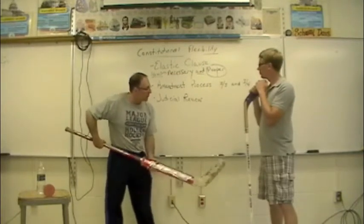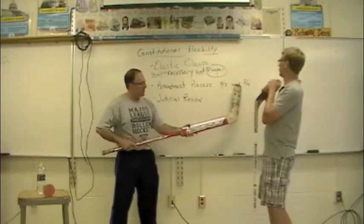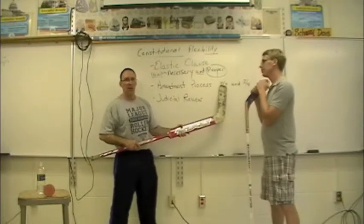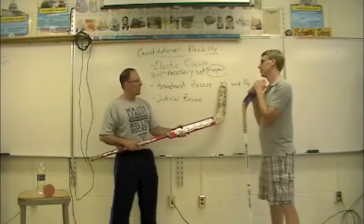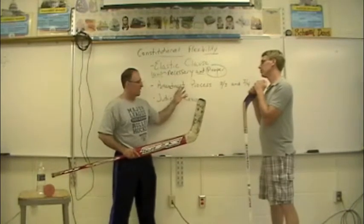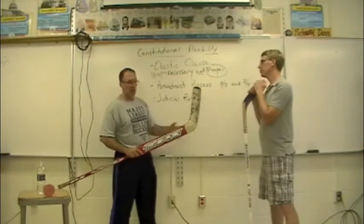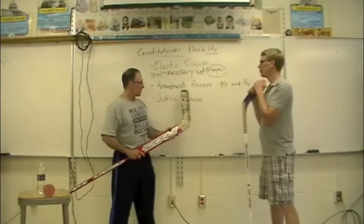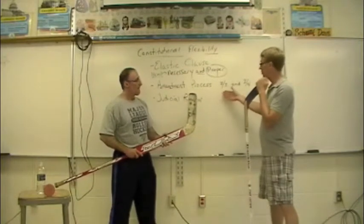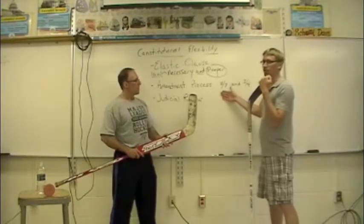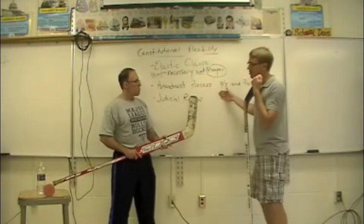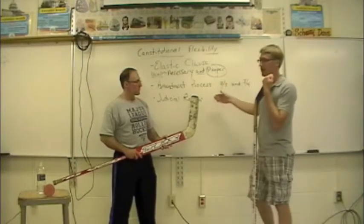It takes three-quarters of all of the states. That's why we have two-thirds and three-quarters. Two-thirds of Congress has to agree to amending or changing the United States Constitution. And so rarely does two-thirds of Congress agree on anything, which makes this difficult to amend.